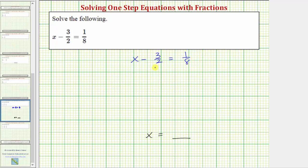For this example, instead of showing the addition underneath the equation or showing it vertically, I'm going to show it horizontally because we have fractions. So we'll add 3 halves to both sides, which gives us on the left x minus 3 halves plus 3 halves equals on the right 1 eighth plus 3 halves.